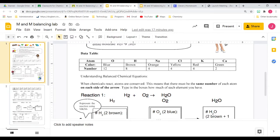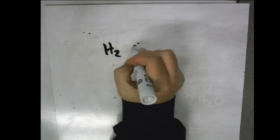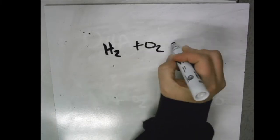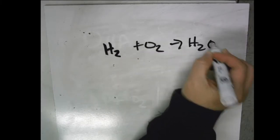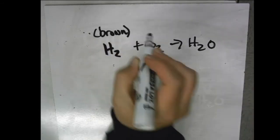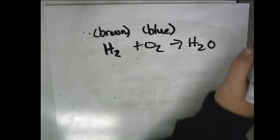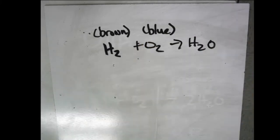All right, so let's go ahead and get started. We're going to start with our first one. The first one is already written there. It's H2 plus O2 yields water, and it tells you on the boxes up there that these are going to be brown M&Ms, these will be blue, and of course these will be brown and blue.